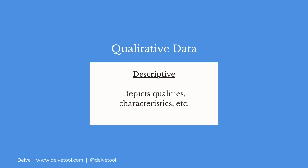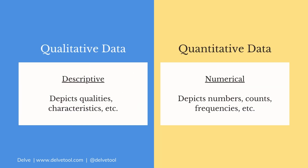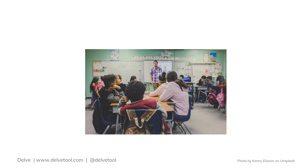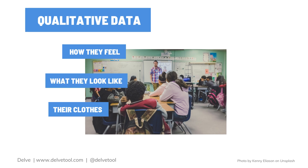Qualitative data is data that is descriptive and depicts qualities or characteristics, whereas quantitative data is numerical. If there were a group of people in a room, qualitative data could describe how they feel, what they look like, what clothes they're wearing.